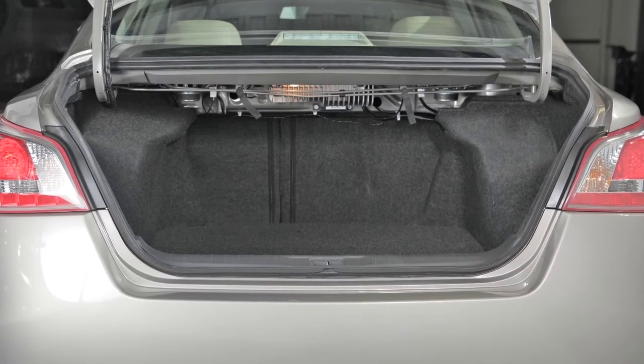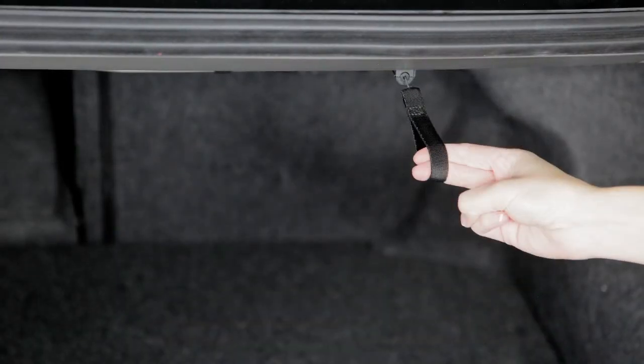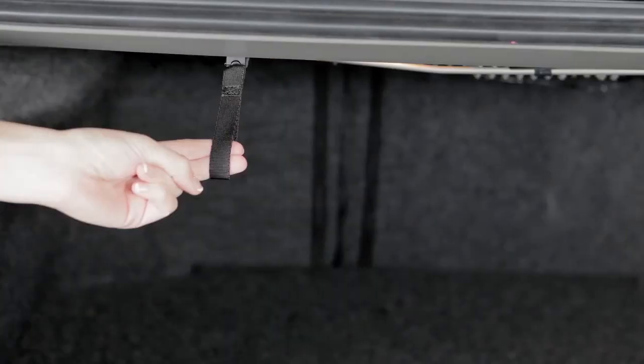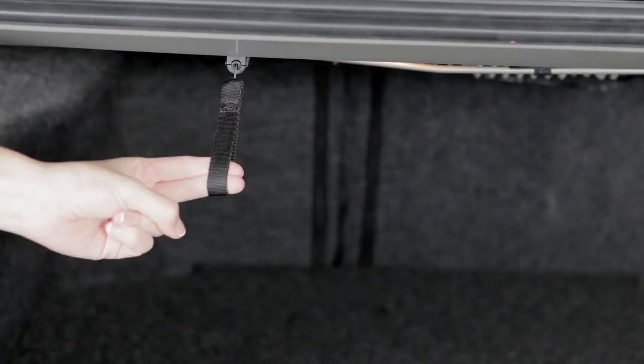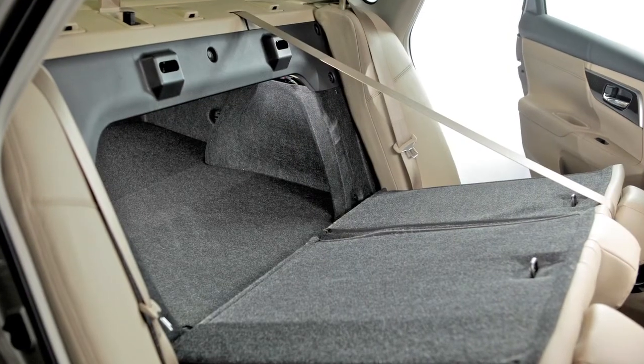To fold down the rear seats from the trunk area, reach in and pull the strap located on the passenger's side of the trunk opening. Then pull on the strap located on the driver's side of the trunk opening and fold both seats forward for added trunk space.